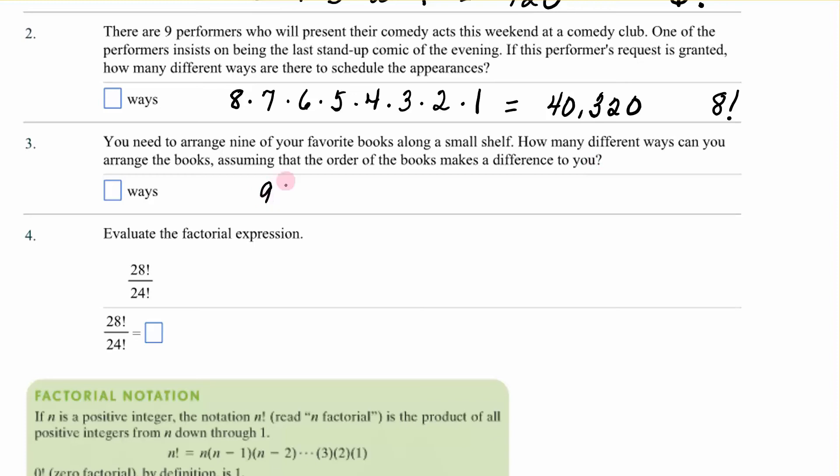You have nine ways, nine choices for the first position. There will only be eight for the second, then seven, then six, then five, then four, then three, then two, then one. So this is the same as nine factorial.